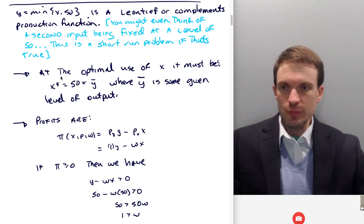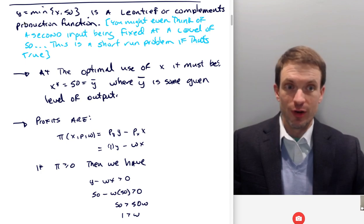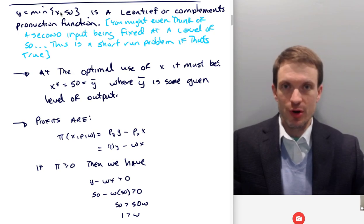So, all right, at the optimal use of X, it has to be the case that X star is going to be equal to 50 is equal to Y upper bar, where Y upper bar is some given level of output, right? So for a given level of output, it's got to be the case that Y is equal to X, and Y is equal to 50. Remember, with one of these production technologies, you could replace the comma with an equal sign. Why? Well, that's sort of a requirement for efficiency. Anything other than these being equal at the optimals can involve some degree of waste, and then you're not optimizing.